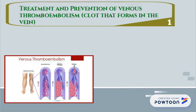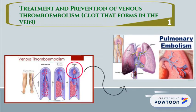Venous thromboembolism is the formation of a blood clot in the vein deep in the body, usually at the lower leg, which is also known as deep vein thrombosis. The clot can break off and travel along the bloodstream towards the blood vessels in the lung, causing a condition called pulmonary embolism.